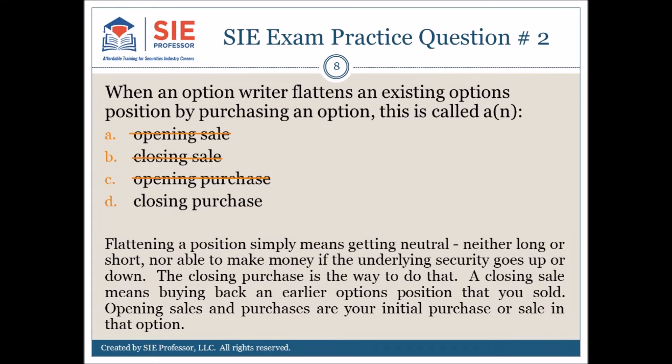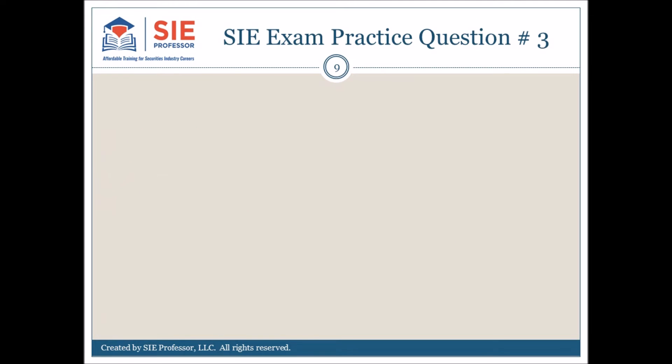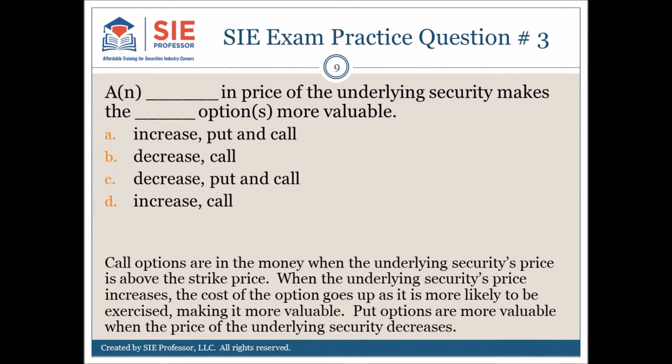SIE exam practice question and answer for number 3. Call options are in the money when the underlying security's price is above the strike price. When the underlying security's price increases, the cost of the option goes up as it is more likely to be exercised, making it more valuable. Put options are more valuable when the price of the underlying security decreases. The answer is D.